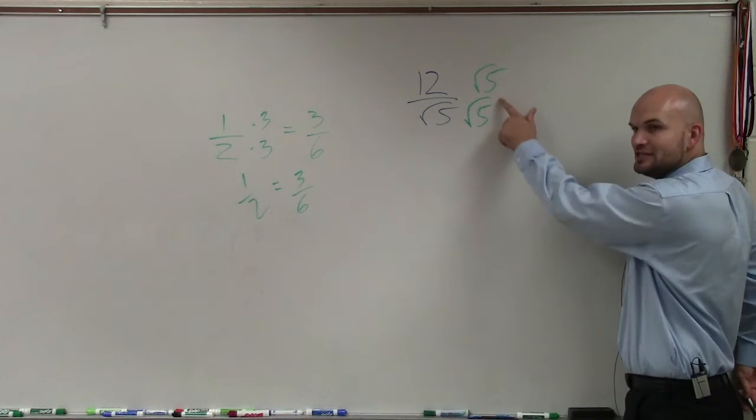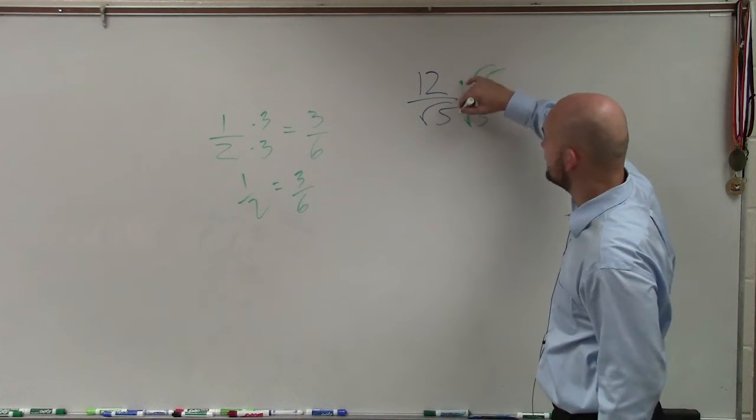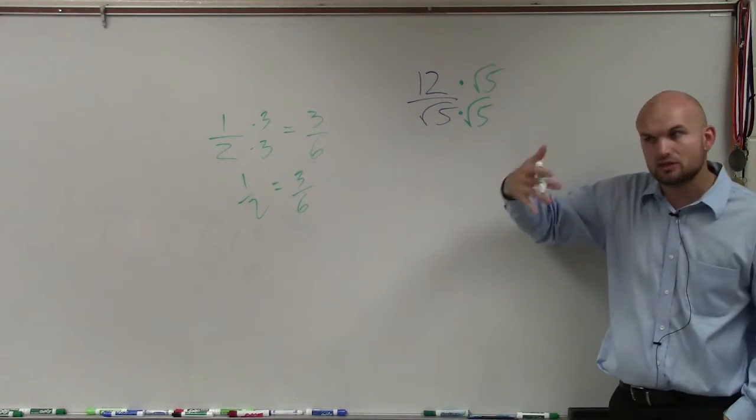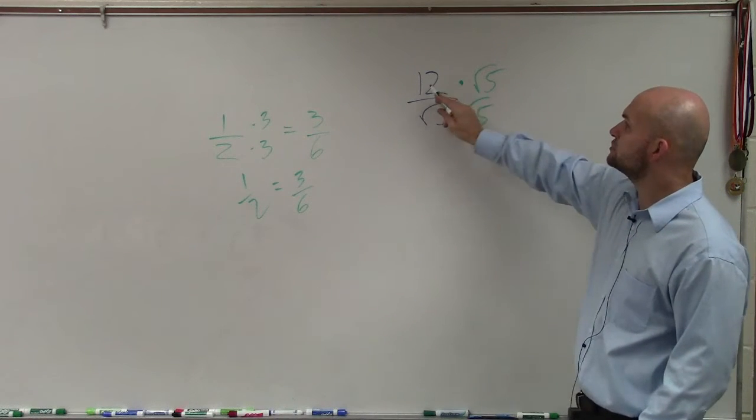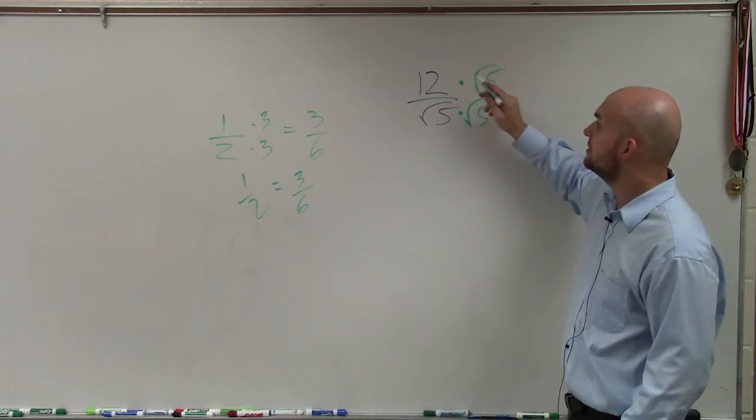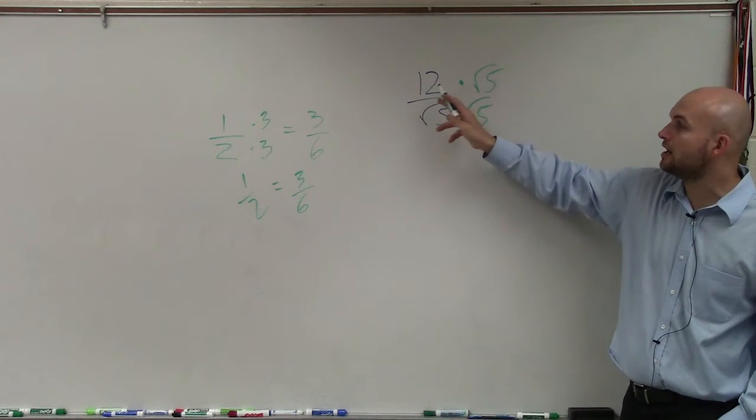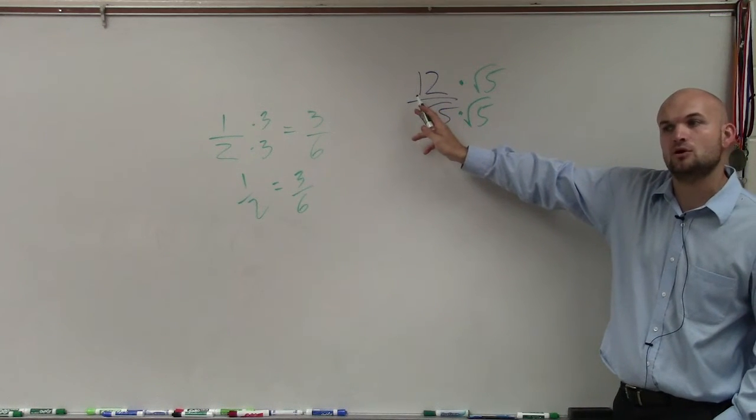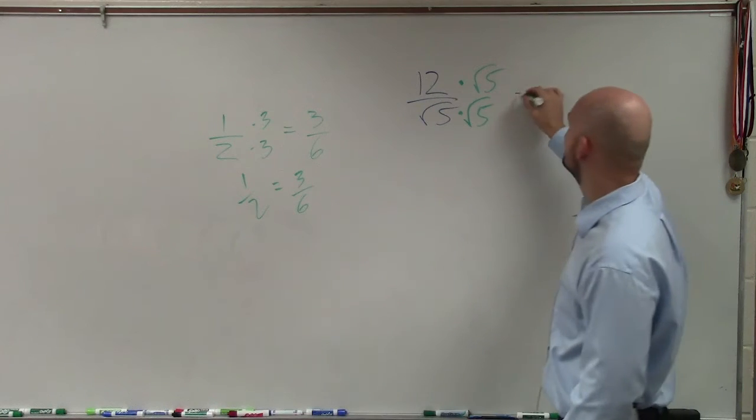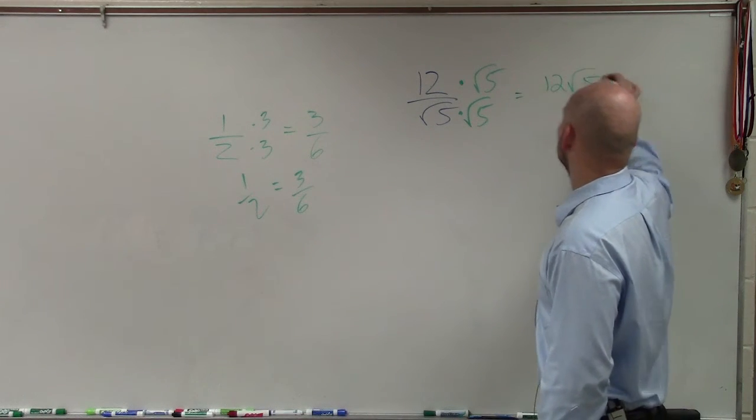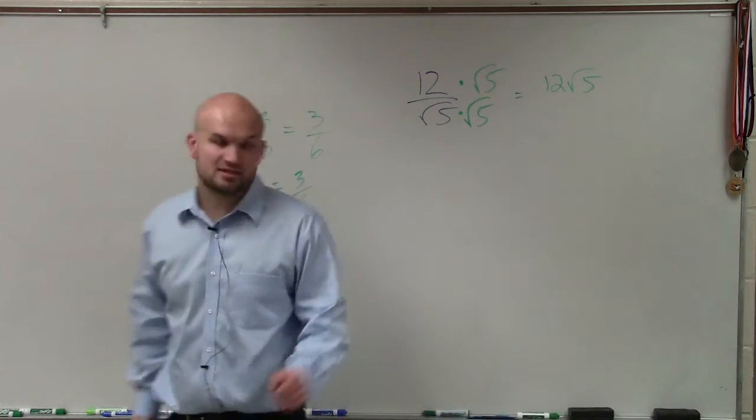So I'm not changing the answer here when I just multiply by square root of 5 times square root of 5. It's still going to be an equivalent fraction. But 12 times square root of 5, you cannot multiply them. This is under a radical sign. This is not. This is a whole number. So my answer for this would be 12 square root of 5.